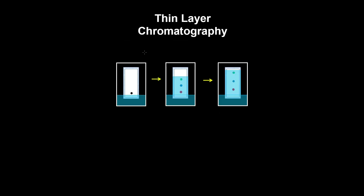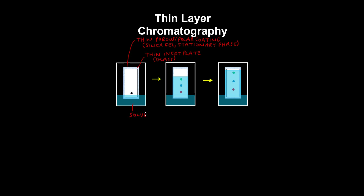Thin layer chromatography is used to separate the components of a solution and it's similar to paper chromatography. Except here you have a thin inert plate — for example glass — coated with silica gel, which is a thin, porous, and polar coating. This is the stationary phase, and it enables the solvent to move through it against gravity using capillary pressure.